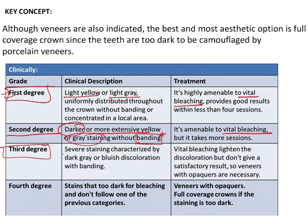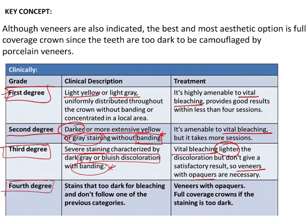Third degree involves severe staining characterized by gray or bluish discoloration with banding. Vital bleaching can be done but only lightens the discoloration without a satisfactory result, so veneers with opaquers are the treatment of choice. Fourth degree is the most severe — stains too dark for bleaching and not fitting previous categories. Here veneers with opaquers can be used, but the best treatment is full coverage crowns if staining is too dark.